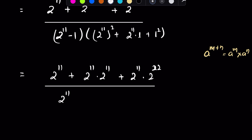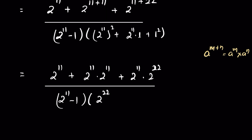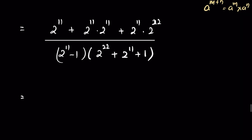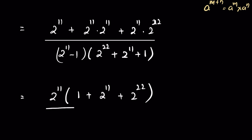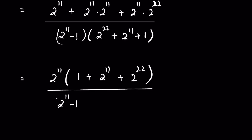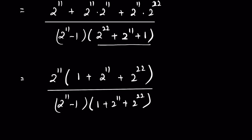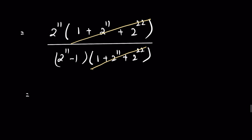The full expression becomes 2¹¹(2²² + 2¹¹ + 1) over (2¹¹ - 1)(2²² + 2¹¹ + 1). We can rearrange the numerator bracket as 1 + 2¹¹ + 2²², which matches the denominator factor. These two like factors cancel out, leaving us with 2¹¹ / (2¹¹ - 1).